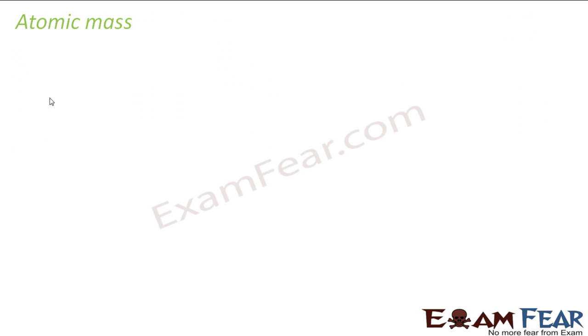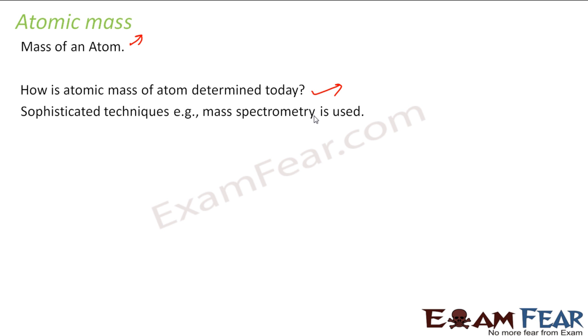Let us talk about atomic mass. Atomic mass is nothing but mass of an atom. Now the question is, how is the atomic mass determined today? I think you must know this. Today we have sophisticated techniques such as mass spectrometry. These techniques are used to find the atomic mass of any atom.